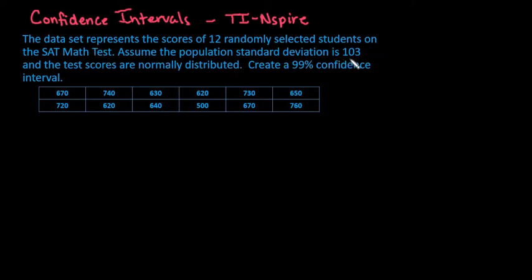Assume the population standard deviation is 103 and the test scores are normally distributed. We're going to create a 99% confidence interval.